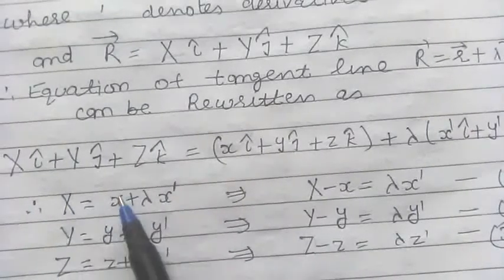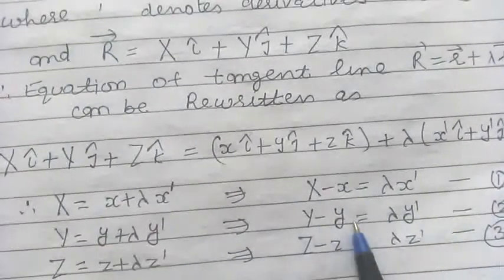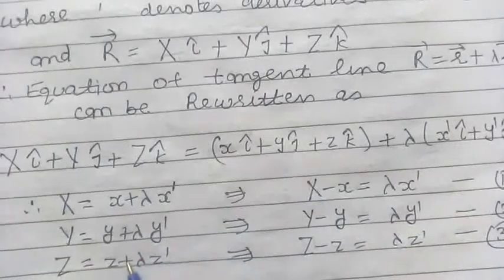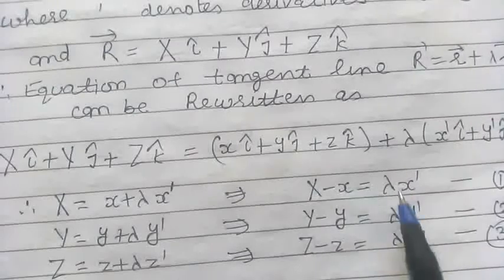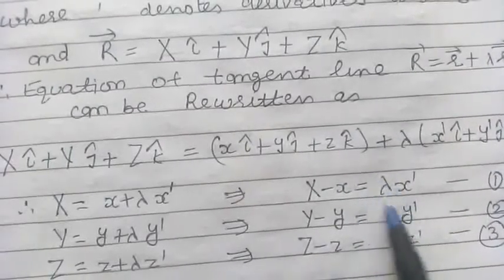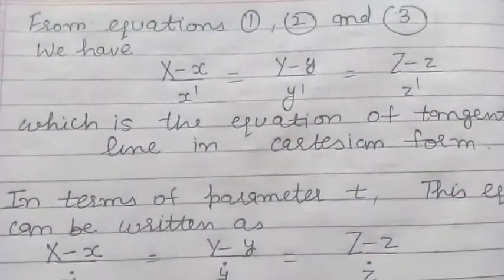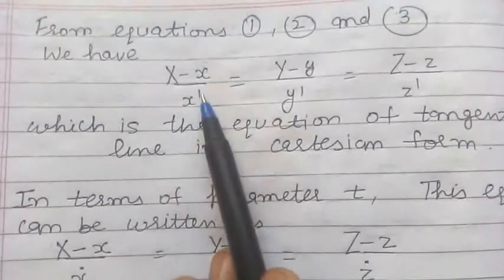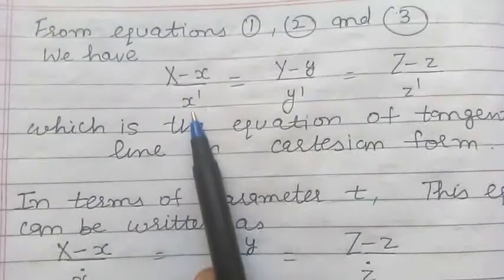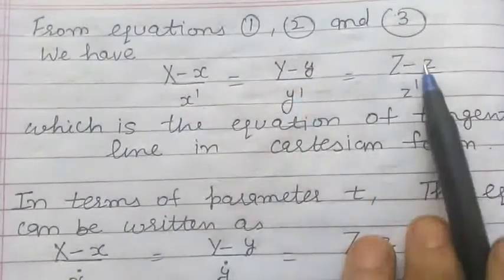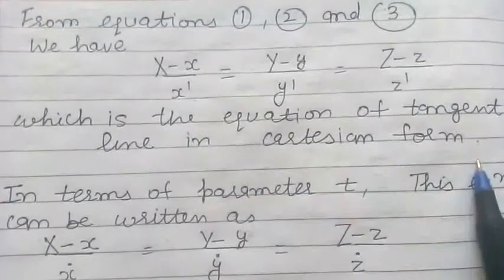From these three equations we get: X − x = λx', Y − y = λy', Z − z = λz'. Finding the value of λ from all three equations and equating, we get the equation of the tangent line in Cartesian form: (X − x)/x' = (Y − y)/y' = (Z − z)/z'. This is the equation of the tangent line in Cartesian form.